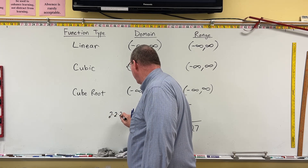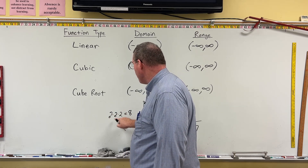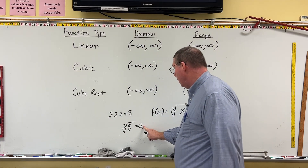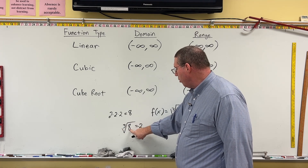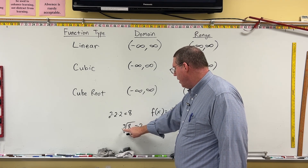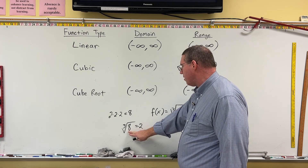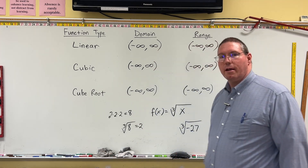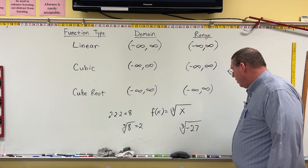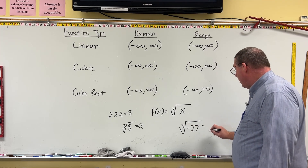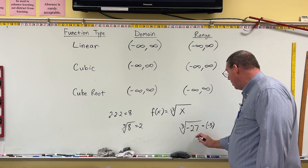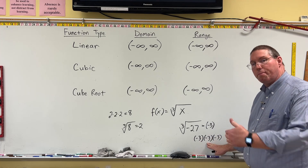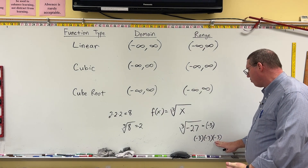For example, 2 times 2 times 2 equals 8, so the cube root of 8 is 2 — it's the number that was multiplied by itself three times. We can input a positive number and get a positive output, or even something like 8 million as input. The cube root of negative 27 is negative 3, because negative 3 times negative 3 is positive 9, and positive 9 times negative 3 is negative 27.